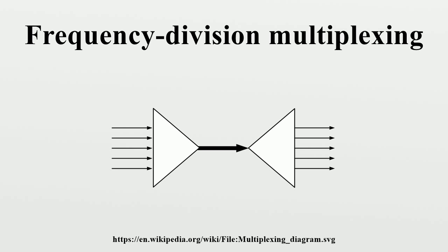Other examples: FDM can also be used to combine signals before final modulation onto a carrier wave. In this case the carrier signals are referred to as subcarriers. An example is stereo FM transmission, where a 38 kHz subcarrier is used to separate the left-right different signal from the central left-right sub channel.